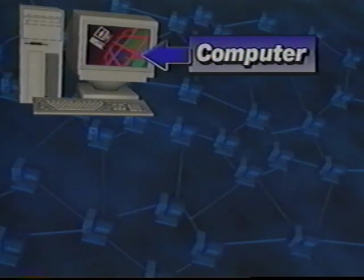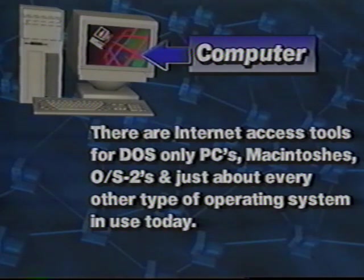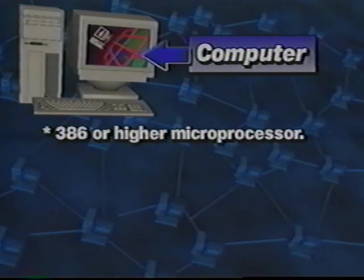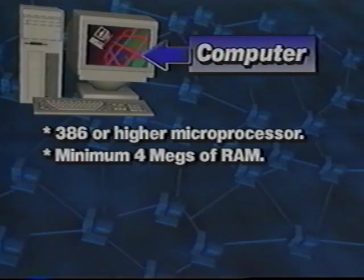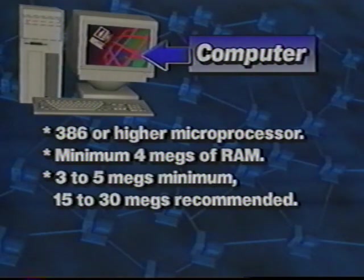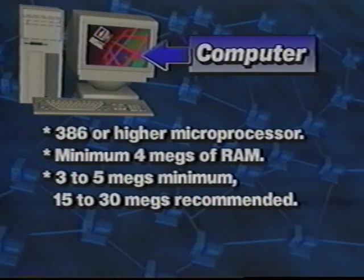The first item on our list is a computer. There are Internet access tools for DOS-only PCs, Macintoshes, OS2s, and just about every other type of operating system in use today. We will be referring to Windows-based PCs in this lesson. Your computer should have a 386, 486, or Pentium microprocessor. You will need at least 4 megabytes of RAM, with 8 megs being better, and 16 megs better yet. Your hard drive will need at least 3 to 5 megabytes of free space, but it is recommended to have at least 15 megabytes available for AOL's new 3.0 version. Some programs, like Microsoft Network, recommend as much as 30 megs of free hard disk space.